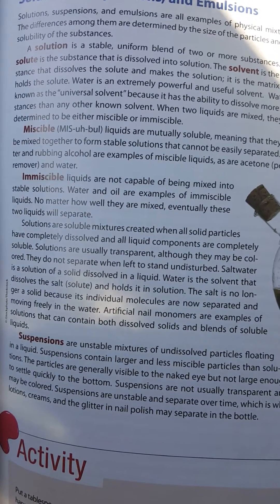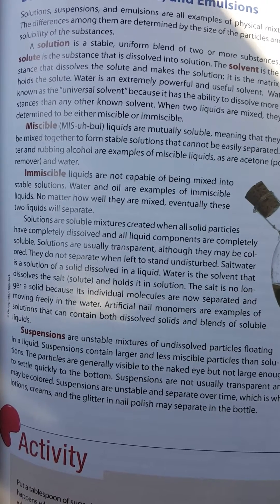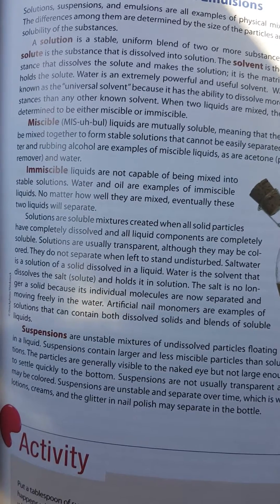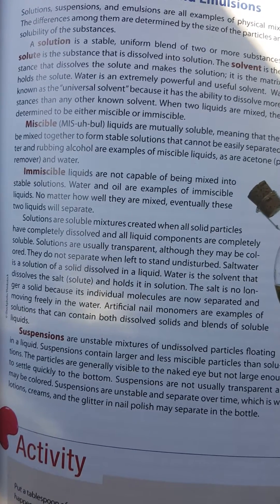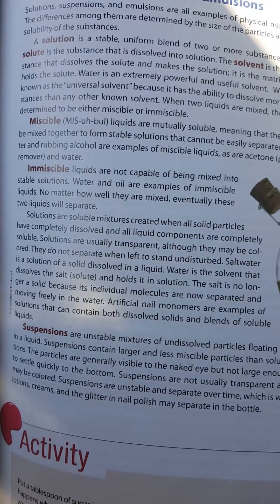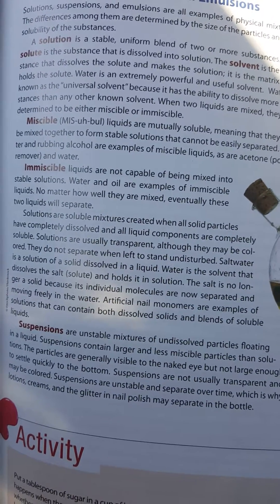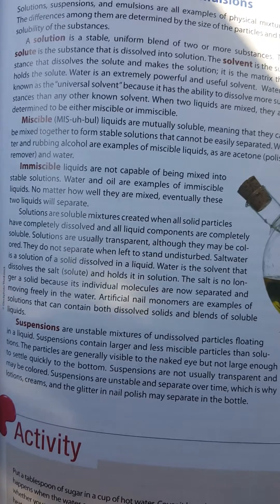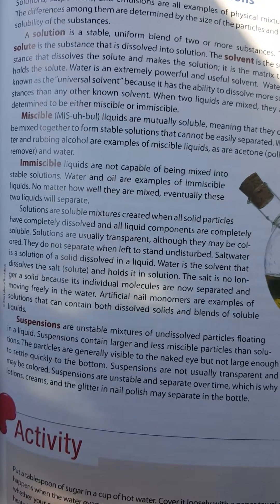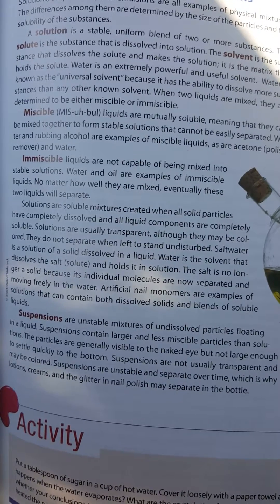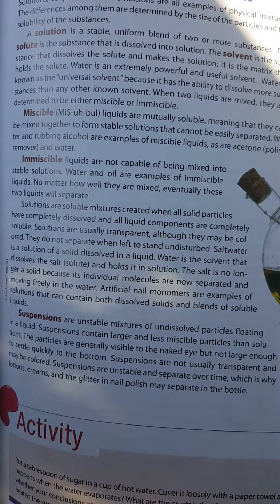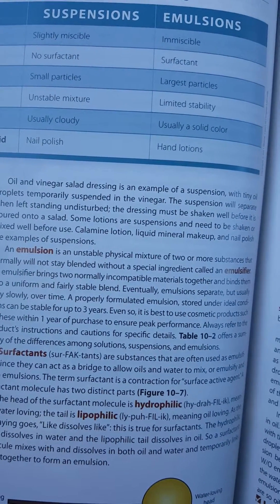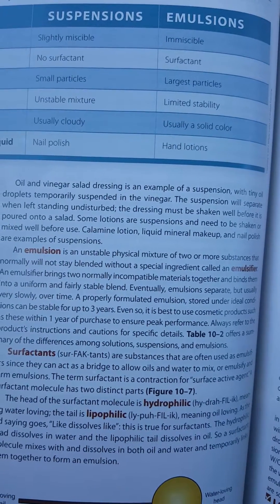Artificial nail monomers are examples of solutions that contain both dissolved solids and blends of soluble liquids. Suspensions are unstable mixtures of undissolved particles floating in a liquid. Suspensions contain larger and less miscible particles than solutions. The particles are generally visible to the naked eye but not large enough to settle quickly to the bottom. Suspensions are not usually transparent and may be colored. Suspensions are unstable and separate over time, which is why lotions, creams, and glitter in nail polish may separate in a bottle.